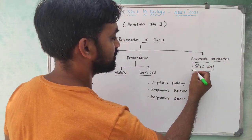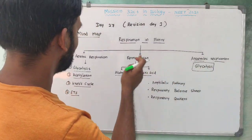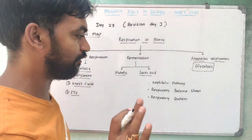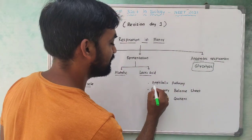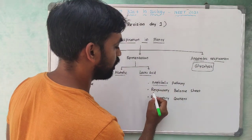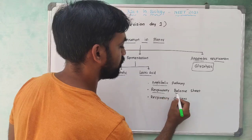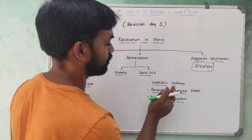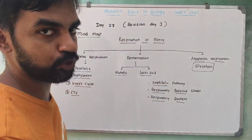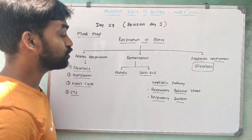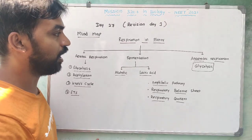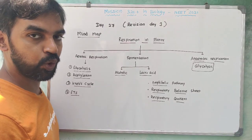Glycolysis is a common step for both anaerobic and aerobic respiration. This pathway is amphibolic. We will also cover the respiratory balance sheet and respiratory quotient. This is the third topic — Respiration — covered.